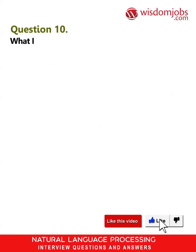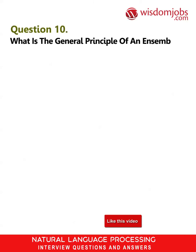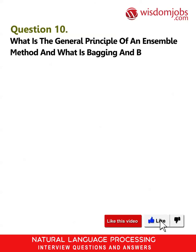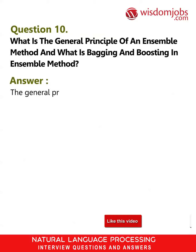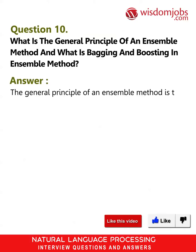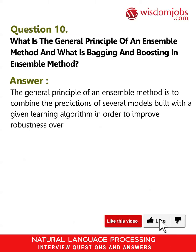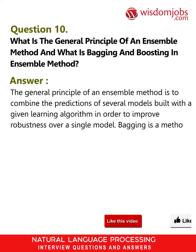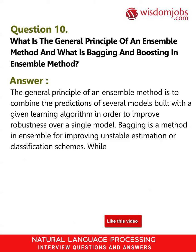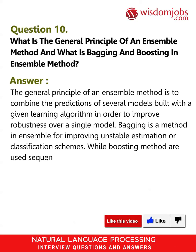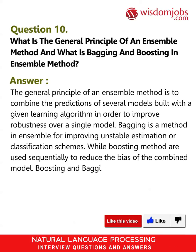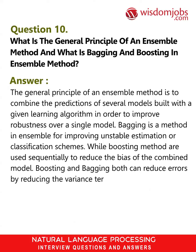Question 10: What is the general principle of an ensemble method, and what is bagging and boosting? Answer: The general principle of an ensemble method is to combine the predictions of several models built with a given learning algorithm in order to improve robustness over a single model. Bagging is a method in ensemble for improving unstable estimation or classification schemes, while boosting methods are used sequentially to reduce the bias of the combined model. Both boosting and bagging can reduce errors by reducing the variance term.